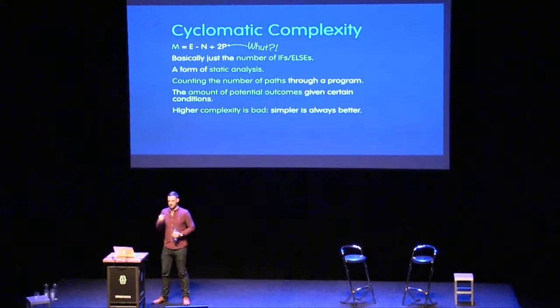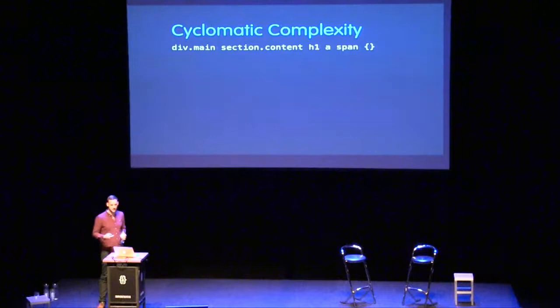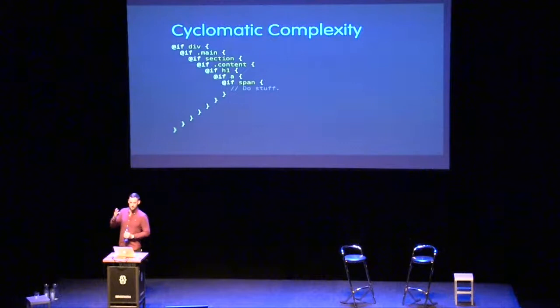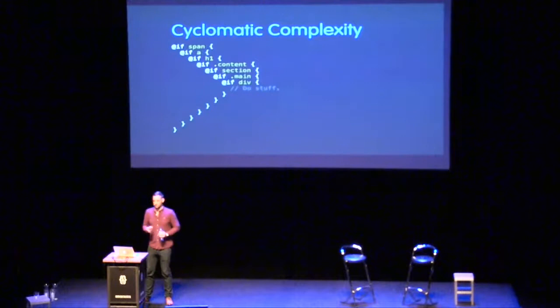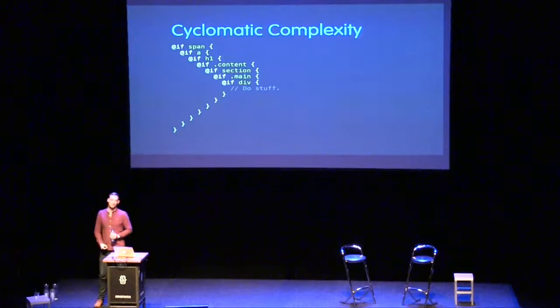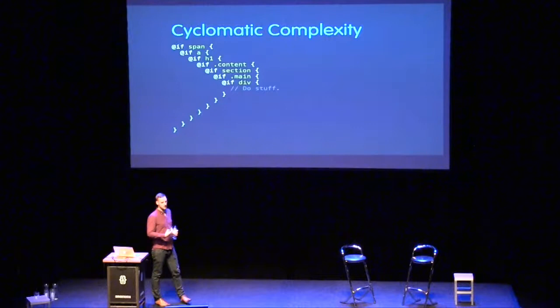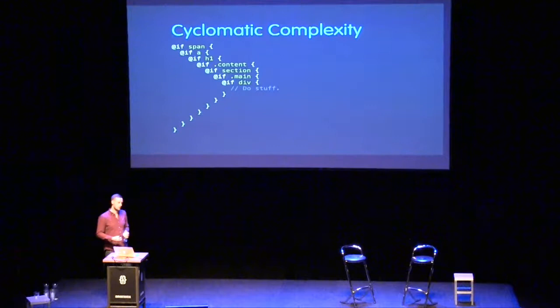CSS kind of does have logic, and it always has — I'm not talking about preprocessors. Imagine a selector like this — a very unpleasant selector. What we're actually saying is: if there's a div with class `main`, if there's a section with class `content`, if there's an h1, if there's an `a`, if there's a `span` — do this. Because browsers read selectors right to left, we're asking the browser seven ifs. That has a cyclomatic complexity of about seven — a lot more complexity than necessary.